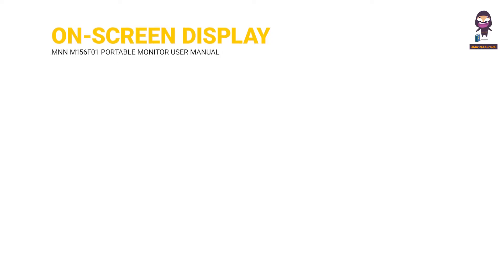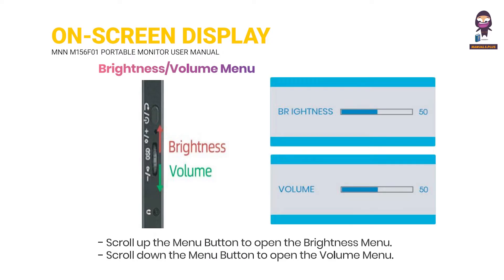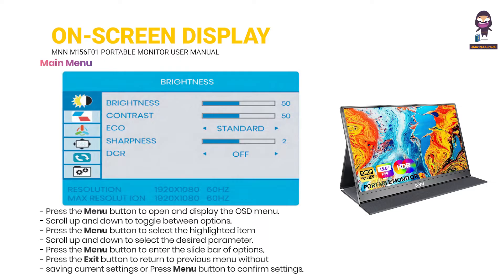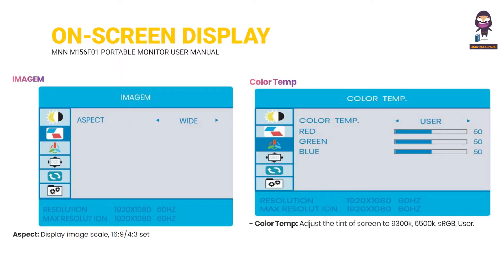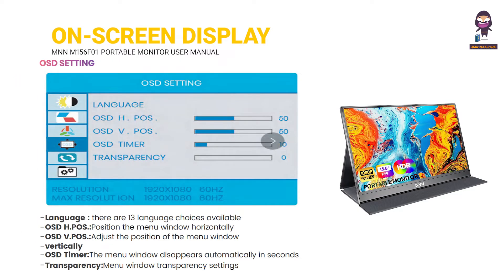Using the on-screen display OSD menu: Brightness, volume, and menu controls. Main menu options include Brightness/Contrast, Image Color, OSD Setting, and OSD Setting Reset.